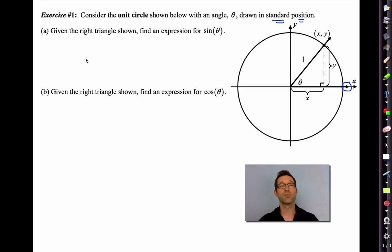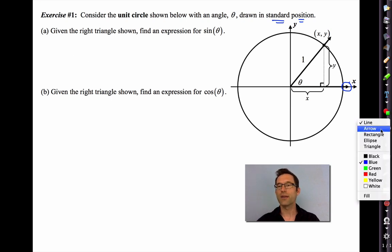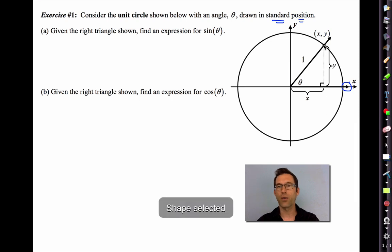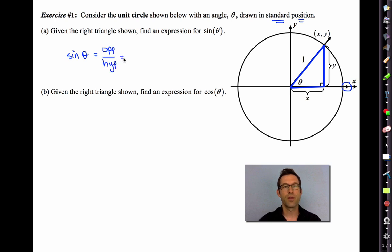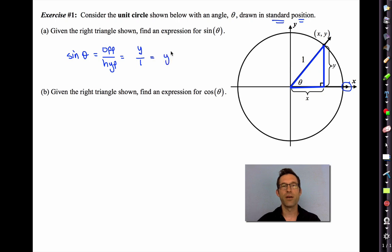Letter A says: given the right triangle shown, find an expression for sine of theta. We've got a right triangle with three side lengths: x, y, and the number one. So the sine of theta will be the side opposite of theta divided by the hypotenuse. The side opposite of theta is simply the y-coordinate, and the hypotenuse is simply one. So the sine of theta is simply the y-coordinate on the unit circle.